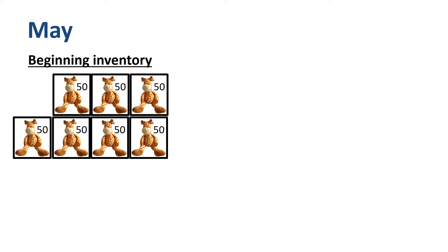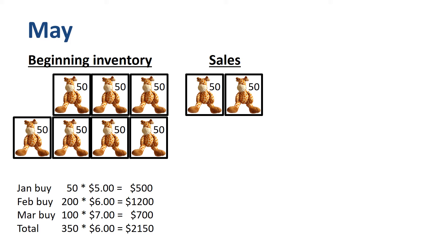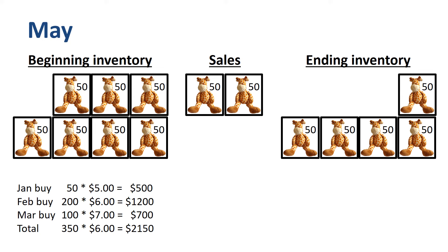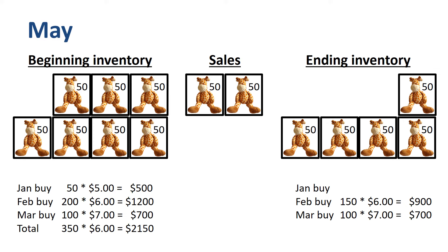Onward to May. The ending inventory of April is the beginning inventory of May. Two boxes of Toy Giraffes are sold in May. The ending inventory is 5 boxes of 50 units each, 250 units in total. We once again apply FIFO and assume that the oldest inventory gets sold first. What remains in inventory at the end of May is 0 units from the January buy, 150 units from the February buy, and the full 100 units from the March buy. In total, 250 units with a total purchase price of $1,600, so on average $6.40 per unit.